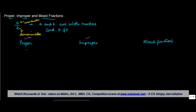A proper fraction is the one where A is less than B, or the numerator is less than the denominator. For example, fractions like 1 upon 2, 3 upon 5, 7 upon 11, and 8 upon 13.